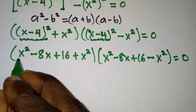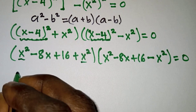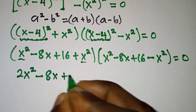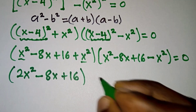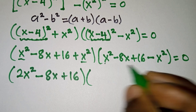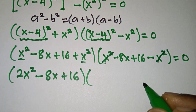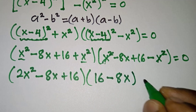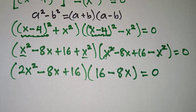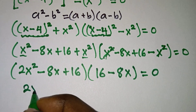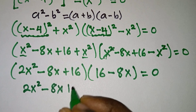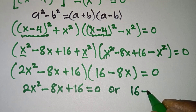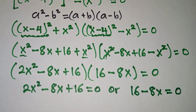Now let's simplify. We have x squared plus x squared, that will be 2x squared, then minus 8x plus 16. Then for the second factor, x squared minus x squared cancels out, and we are left with 16 minus 8x, equal to 0.